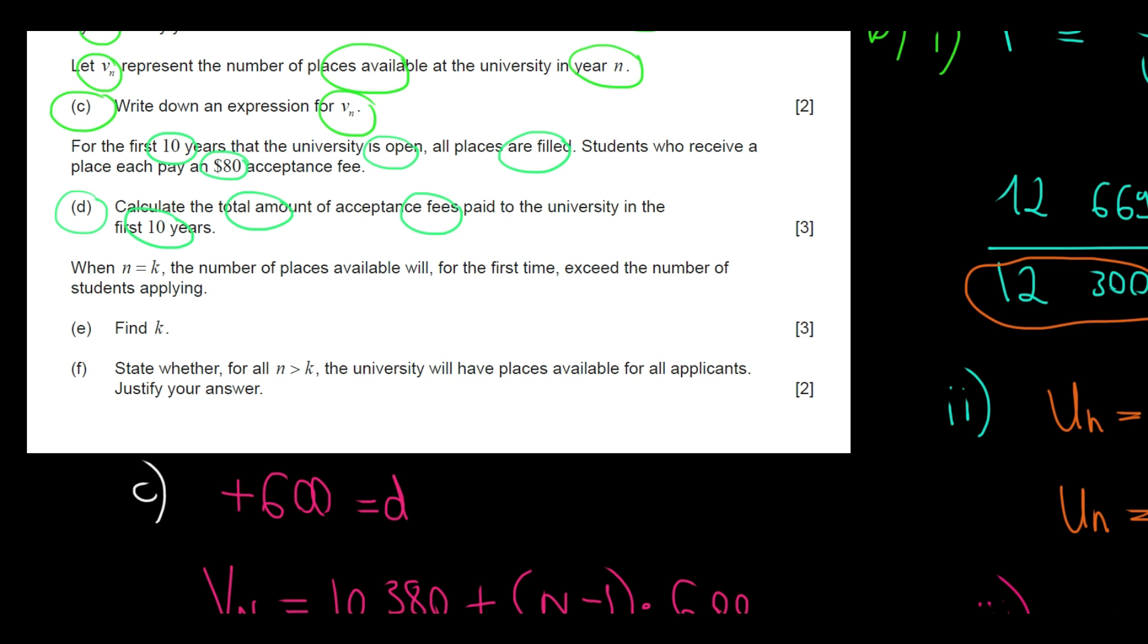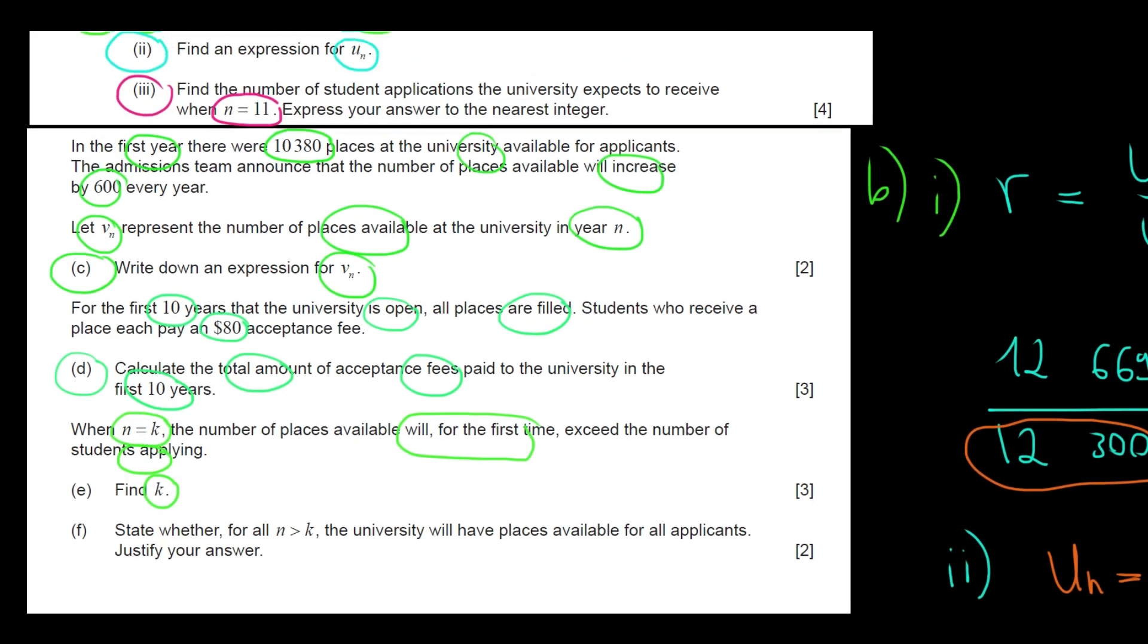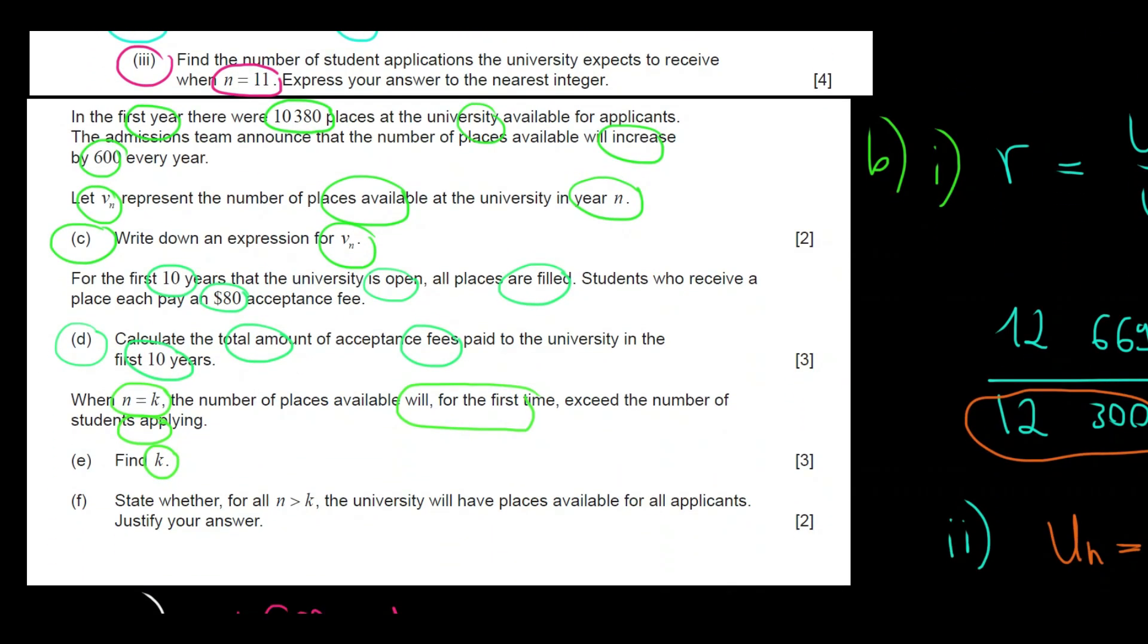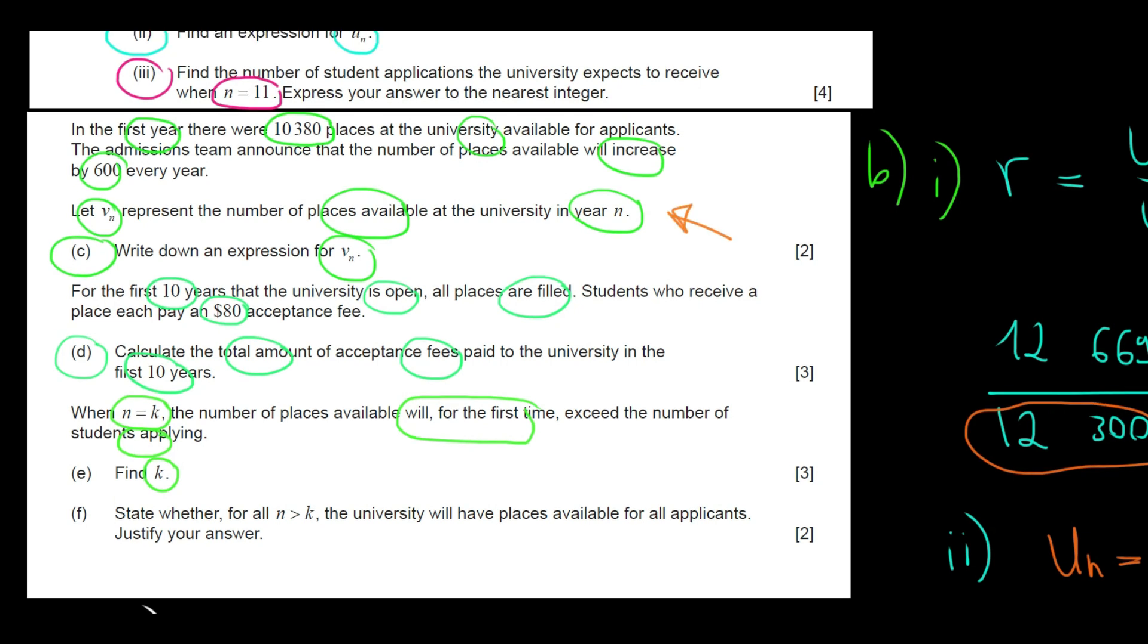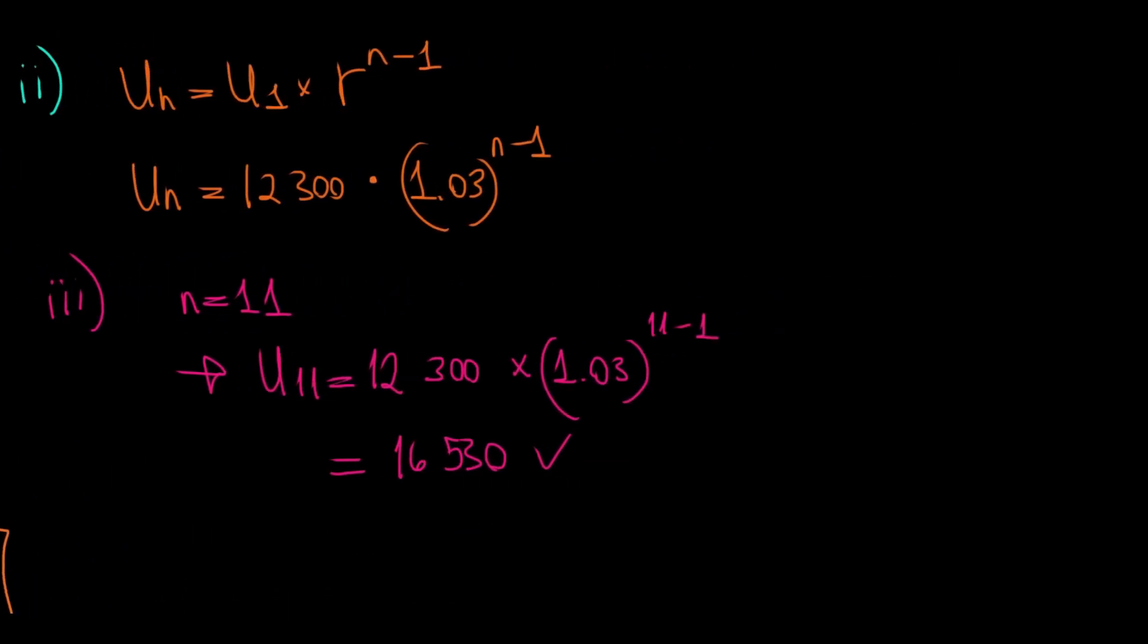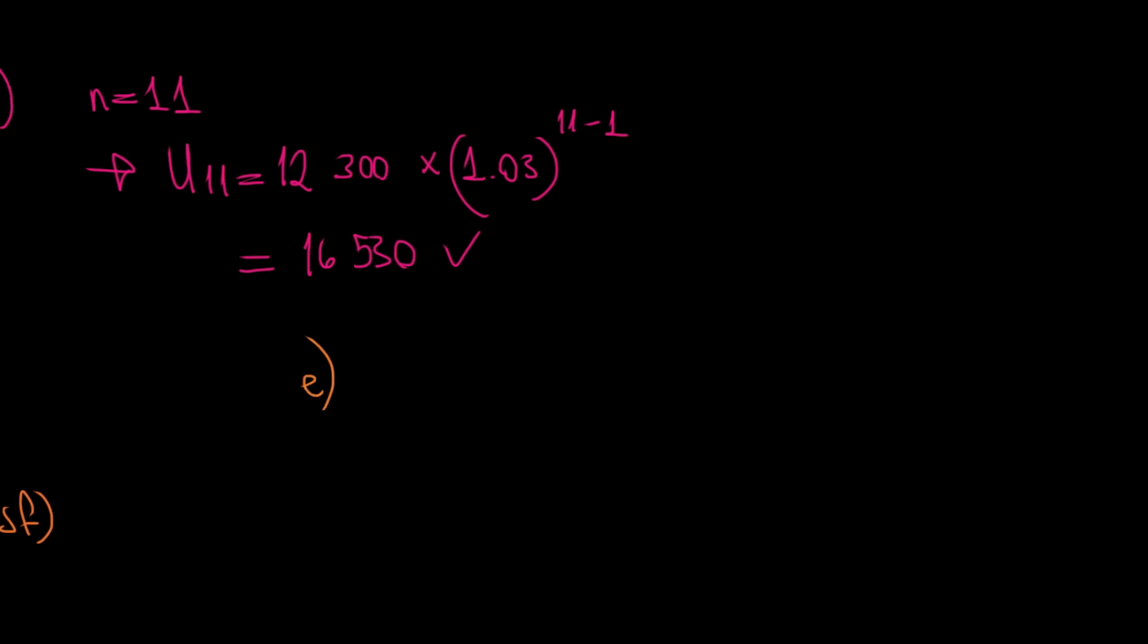We have when N equals to K, the number of places available will, for the first time, exceed the number of students applying. Find K. Let's not forget that. The number of students applying was here in the beginning of the question, following a geometric sequence. And then the university places were following an arithmetic sequence. So, what we're trying to say is that the arithmetic sequence has to be greater than the geometric sequence. We have written them both. I'm just going to write them here again.